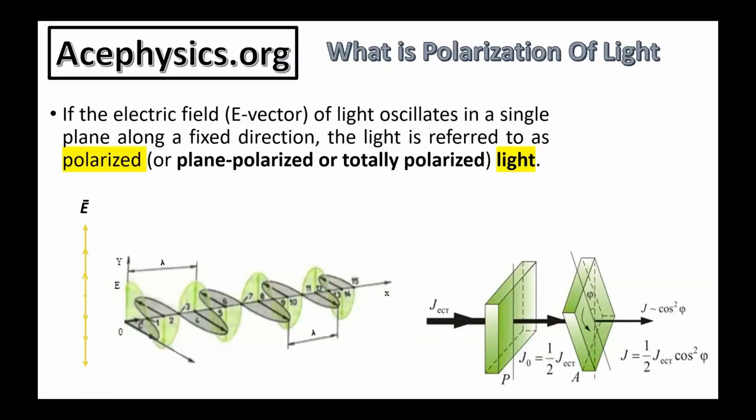What is polarization of light? When the electric field vector of a light wave oscillates in a single plane along a fixed direction, the light is called polarized or plane polarized. The left image shows light that is linearly polarized along the vertical direction, meaning the electric field oscillates up and down.